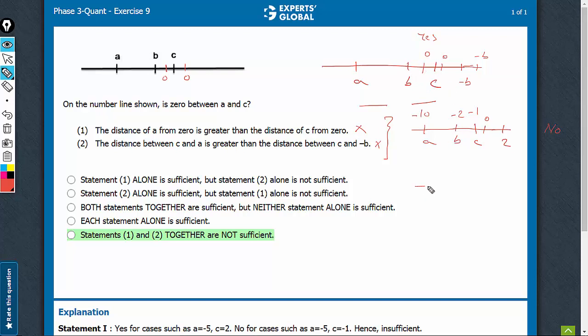We have A, B, C, 0 is somewhere here. First condition is met. A is farther from 0 than C is and second condition. C, A is greater than C and minus B. See, in this case, 0 lies between A and C. Yes is possible.